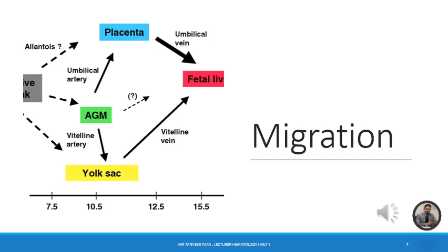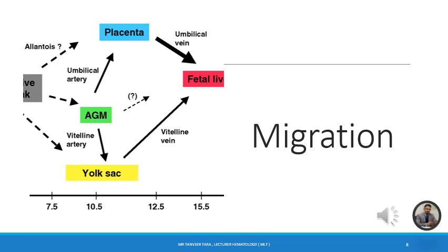During prenatal hematopoiesis, stem cells migrate from one place to another and eventually settle in the bone marrow. In postnatal life, all bone marrow becomes red marrow — the active marrow — and hematopoiesis is completely taken over by the red marrow.